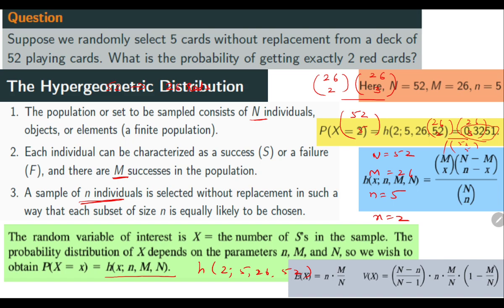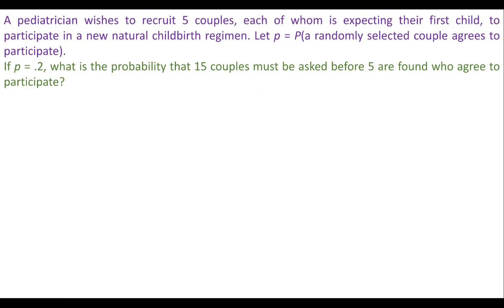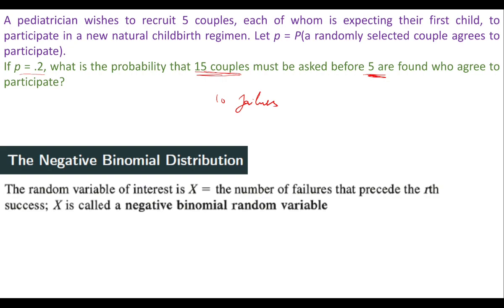The key is to identify which distribution applies from the question. Next: a pediatrician wants to recruit five couples expecting their first child. If p is 0.2, what is the probability that 15 couples must be asked before five agree to participate? This is not binomial or hypergeometric — when you see 15 couples and want 5 successes with the last one being a success, that means 10 failures precede the 5th success. This is negative binomial distribution.